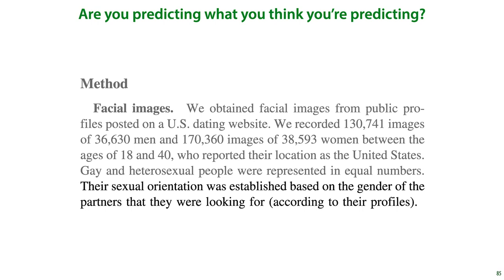Another question is whether the target label you've chosen is saying what you think it's saying. In this case, the authors inferred sexuality from the stated preference in the dating profile. This is clearly correlated with sexuality, but it's not quite the same thing. Firstly, sexuality is one of those attributes, like movie genres, that can only be crudely approximated by a set of finite categories. Moreover, for many people it's not a fixed attribute, and it is subject to some evolution throughout their life. The stated preference on a dating profile also means that you're only capturing those gay people who are willing to live relatively openly as gay, which may be highly dependent on social background.